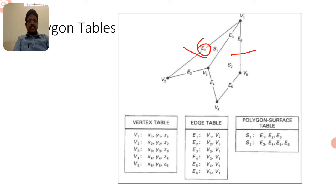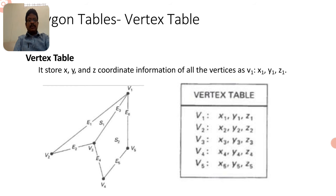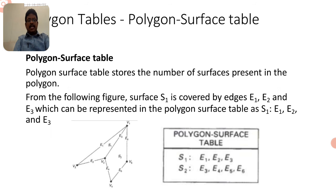The polygon tables consist of the vertex table, edge table, and polygon surface table. We consider how many vertices belong to the given polygon, write all coordinates, and then observe the polygon surface table. Edges E1, E2, E3 belong to surface S1, and edges E3, E4, E5, E6 belong to surface S2, with E3 being the common edge between S1 and S2.